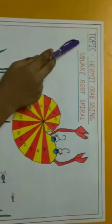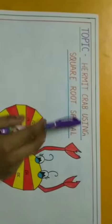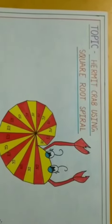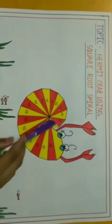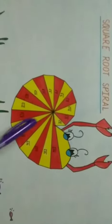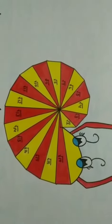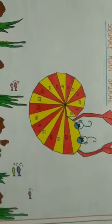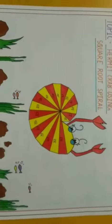The topic of my project is to make a hermit crab using square root sparrow. It is made by using square root of continuous real numbers. Square roots are very important for us as they help in calculating the areas and volumes.